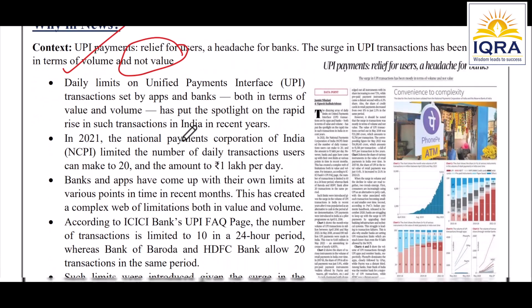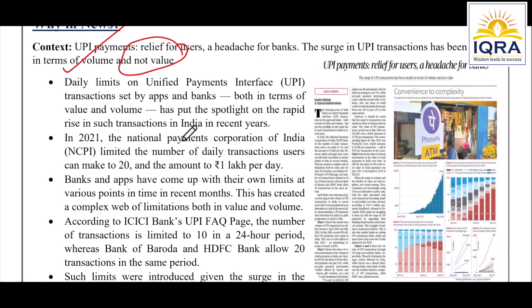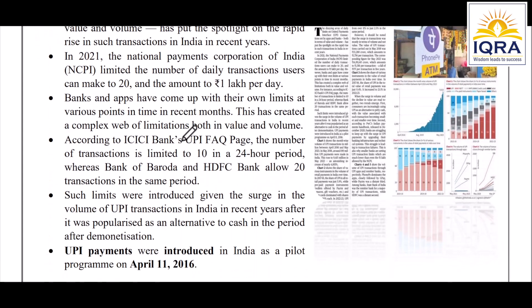The daily limits of UPI transactions — both apps and banks — have recently been compared in terms of value cases versus volume cases. When we talk about 2021, the National Payment Corporation of India, that is NPCI, set a daily number of transaction limit of 20 — either you can do 20 transactions or transactions worth up to 1,00,000 per day.